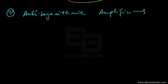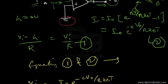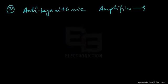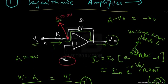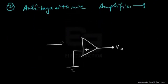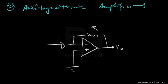The anti-logarithmic amplifier circuit is similar to the logarithmic amplifier but with one key difference. In the logarithmic amplifier, the resistance is at the input and the diode is the feedback element. In the anti-logarithmic amplifier, the positions of the resistance and diode are swapped — the diode is now at the inverting input and the resistance R is used as the feedback element. Terminal A still holds the input voltage VI.